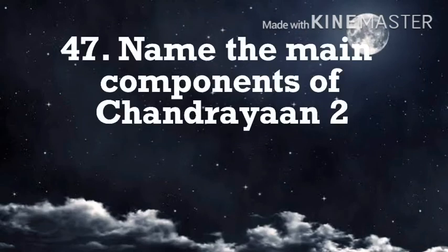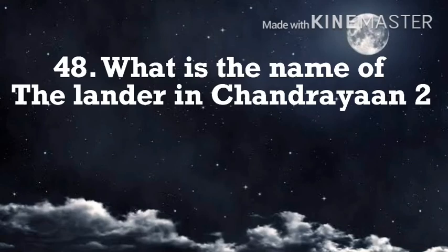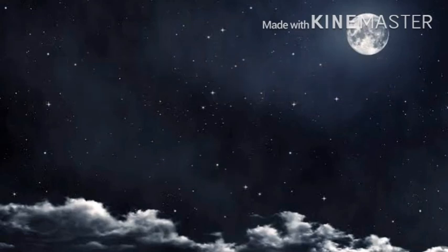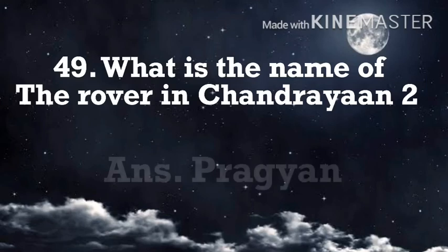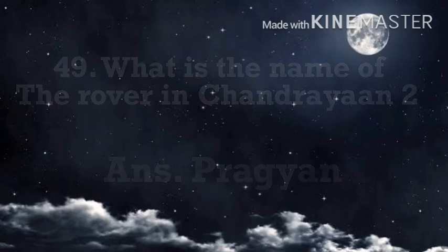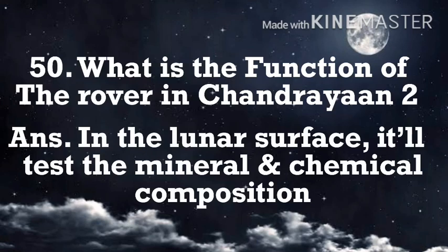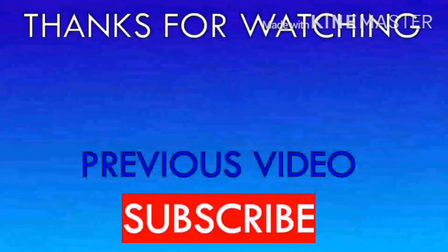Name the three main components of Chandrayaan 2 — orbiter, lander, and rover. What is the name of the lander in Chandrayaan 2? Vikram. What is the name of the rover? Pragyan — meaning wisdom. What is the function of the rover in Chandrayaan 2? On the lunar surface, it will test the minerals and chemical composition.